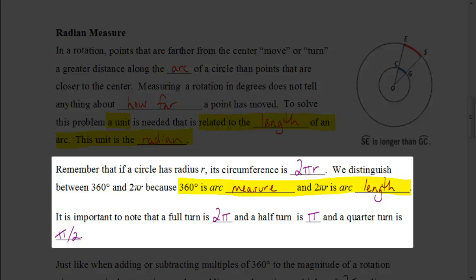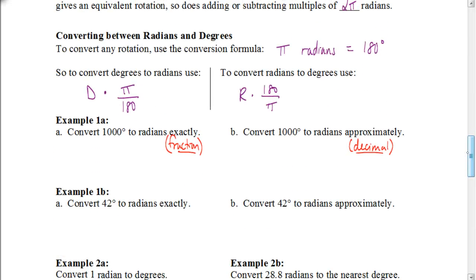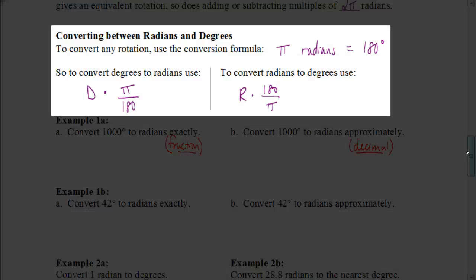When working with the unit circle, the circumference is 2π. So halfway around is π, and a quarter of the way around — 90 degrees — is π over 2. This comes in handy when converting between degrees and radians. Pi radians equals half a rotation, which is 180 degrees. To convert from degrees to radians, multiply by π over 180. To convert from radians to degrees, multiply by 180 over π.